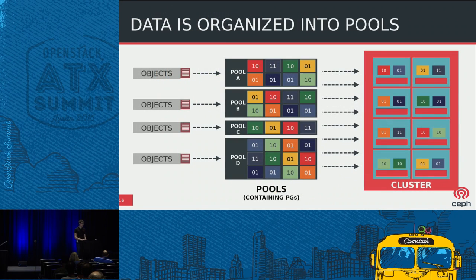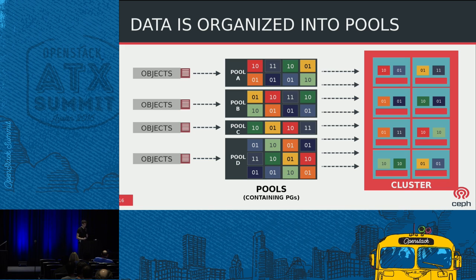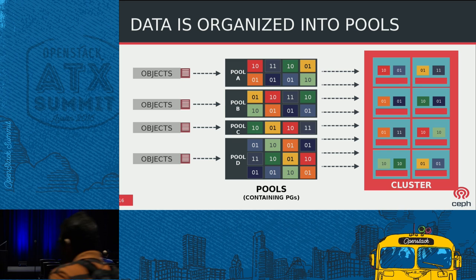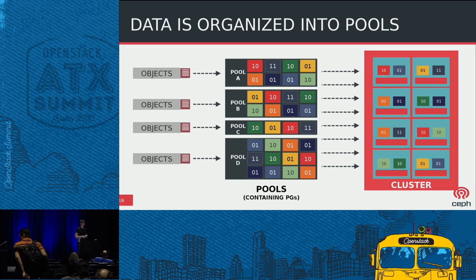Within the storage system you have different namespaces called pools — relevant to CephFS because we have a data pool and a metadata pool, but you might also have pools for RADOS block devices and RGW objects. Each pool is sliced up into shards called placement groups. Those placement groups are what actually get moved around on the OSDs — they move as a unit, so when an OSD fails, you don't move every object to different nodes; you move placement groups as units.